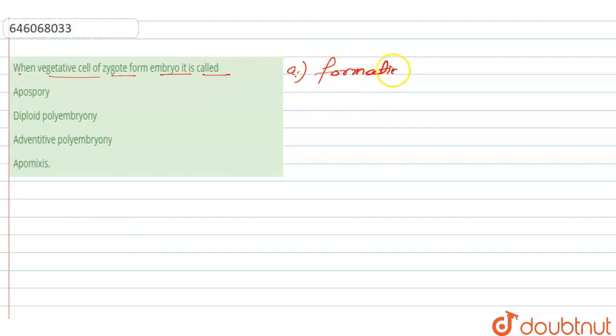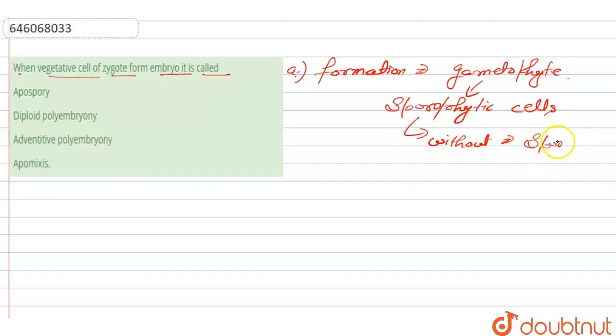The first option is apospory. So what is apospory? It is the formation of the gametophyte from the sporophytic cell without formation of spores. So here it is not related with the zygote formation, so this option is incorrect.